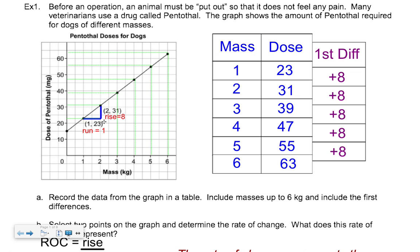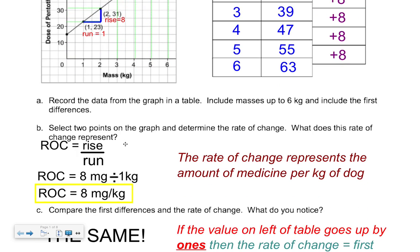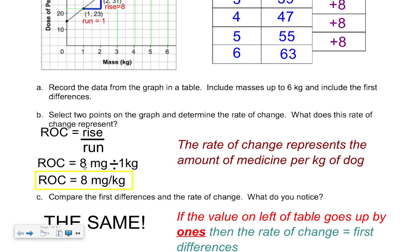That's where the 8 comes from — it's how many steps up I go from 23 to 31. So when I fill in my rise and run: rise is 8 milligrams, divided by run which is 1 kilogram, and you end up with 8 milligrams per kilogram. That's an important thing when talking about rates of change — they usually have a unit; it's always something per something. It's actually like unit rate when we did ratios and proportions — same idea. This is the unit rate: 8 milligrams per kilogram.